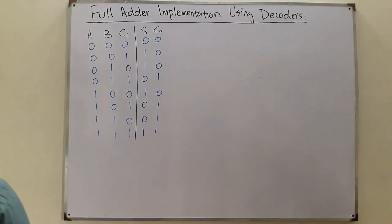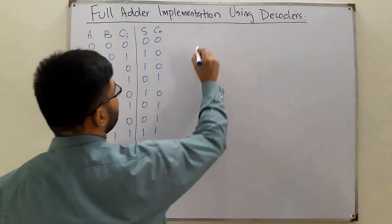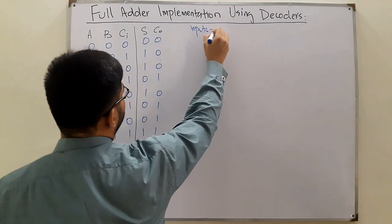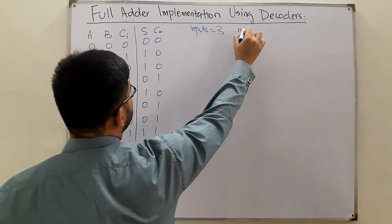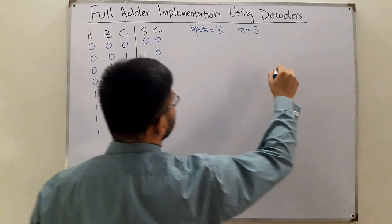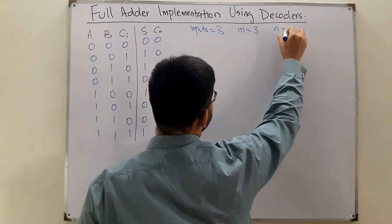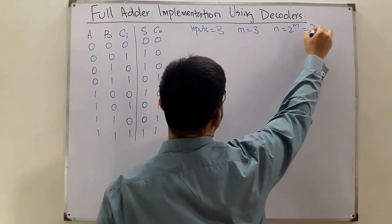Now how do you implement it to decoder? If you see, the number of inputs is 3, which means m is equal to 3. You have the decoder as m cross n, which n is 2 to the power m, which means we have 2 to the power 3 is 8 output lines.